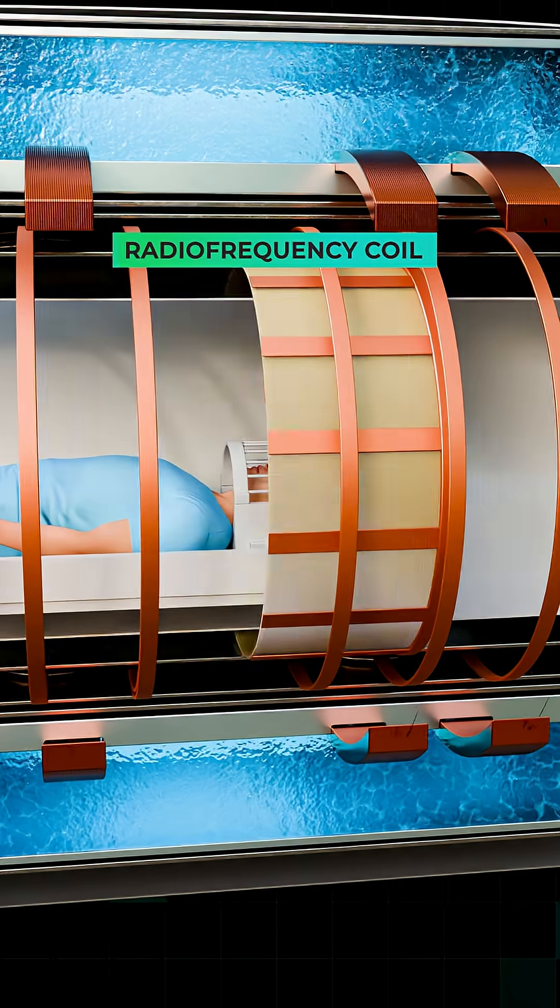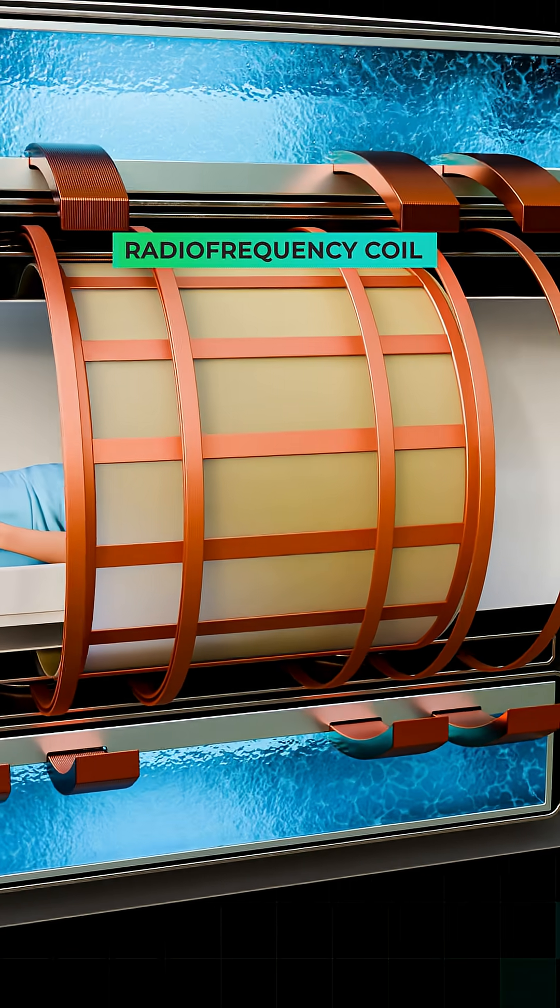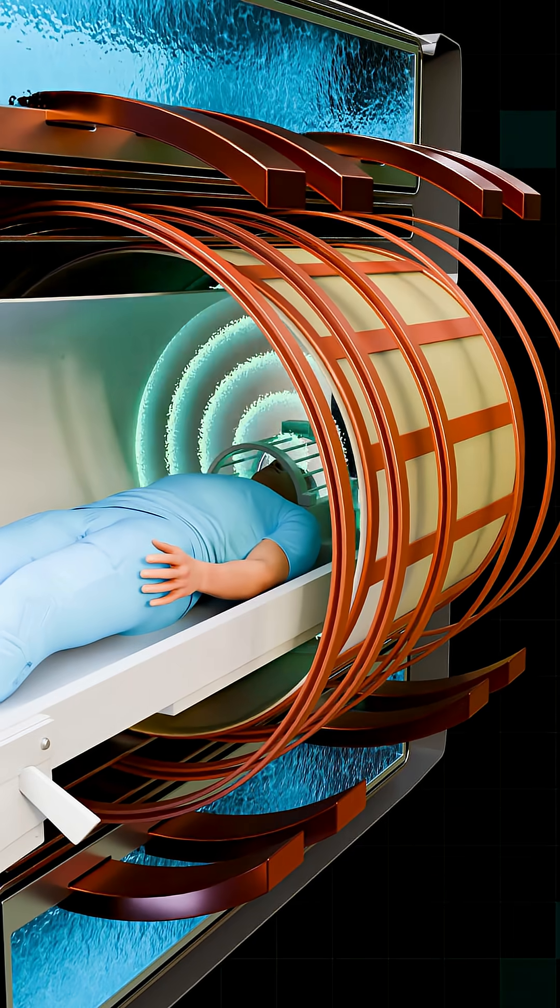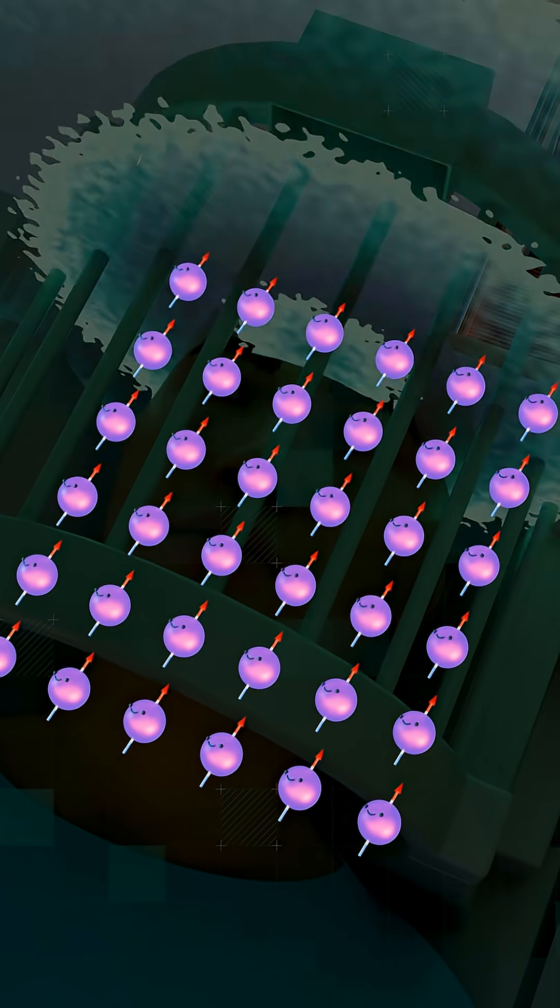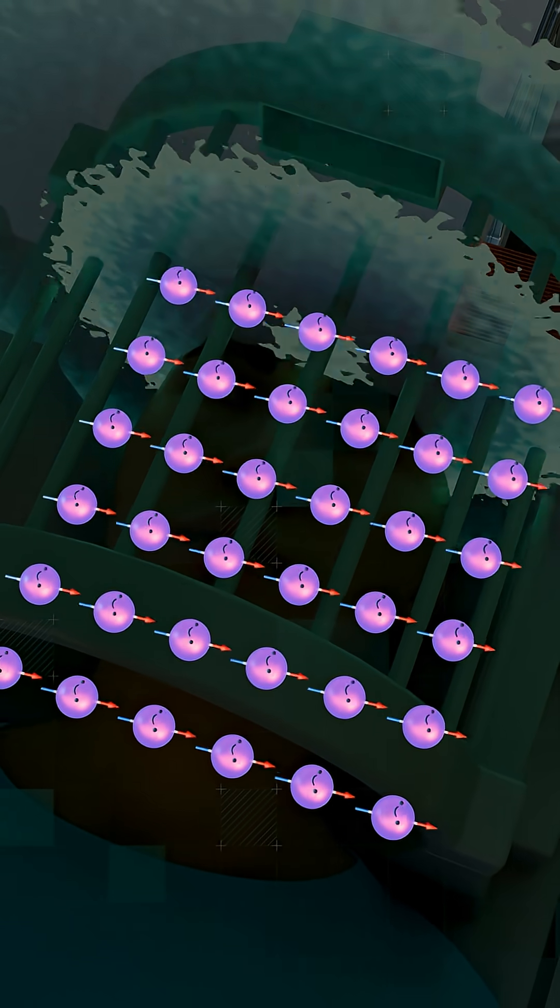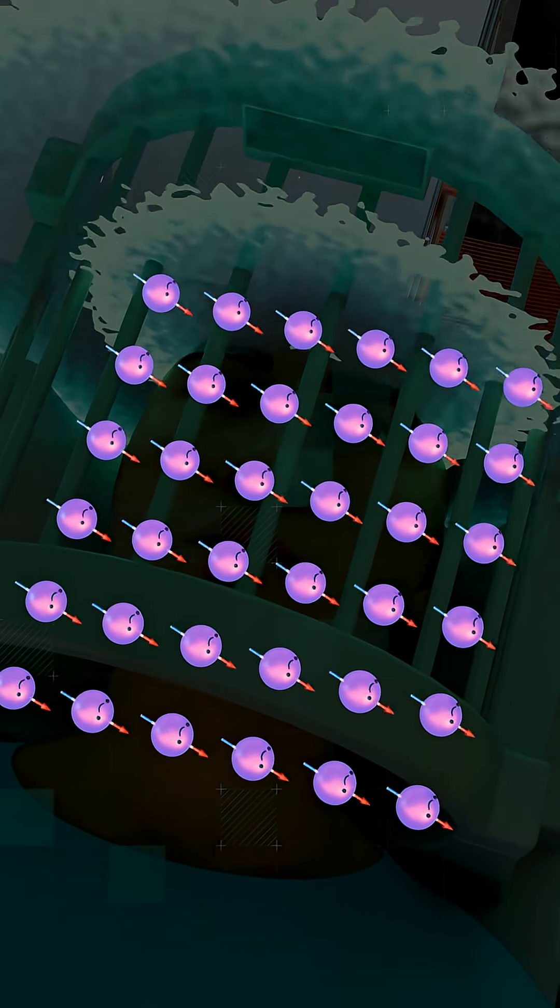Next, another set of coils, the RF coils, deliver a burst of radio waves. This energy knocks the tiny magnets sideways so that they begin wobbling together in sync along the transverse plane.